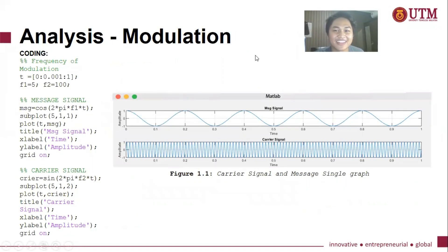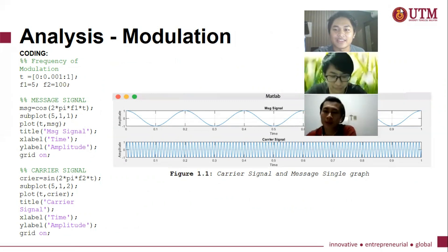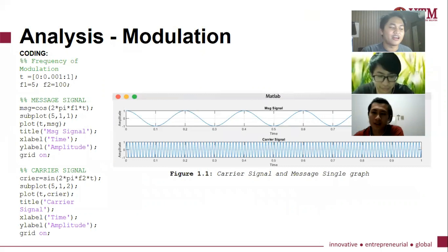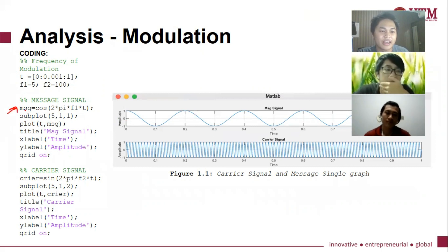My name is Alexander Anderson. I'm going to explain about the analysis of modulation. So this is the coding based on our own research, our own problem solving. As we can see that to produce a message signal, we're going to use this formula and F1 is actually a message frequency.